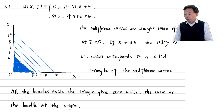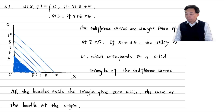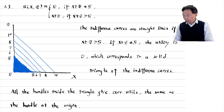Which of our preference assumptions does this example violate? Recall that the preference assumptions are completeness, transitivity and more is better. This example violates the more is better assumption. For instance, the bundle with 5 units of x and 0 units of z gives Fiona the same satisfaction as the bundle with 0 units of x and 0 units of z. It is a contradiction of the more is better assumption.